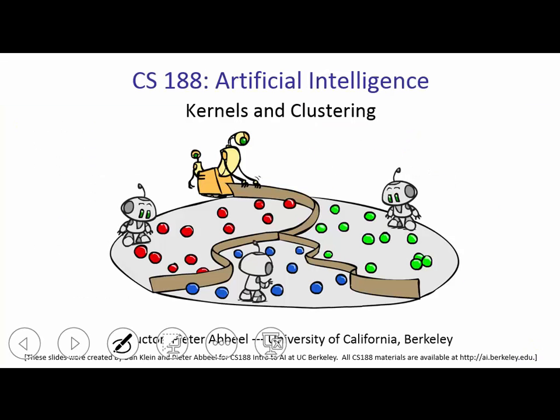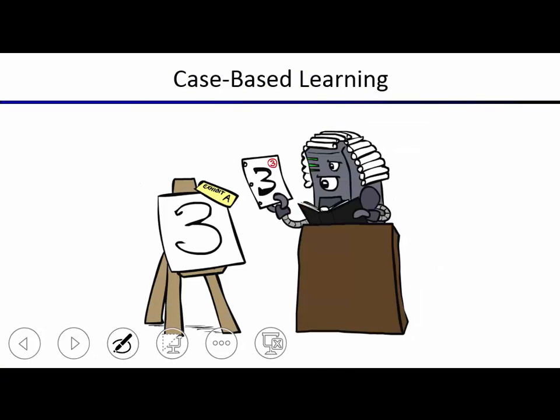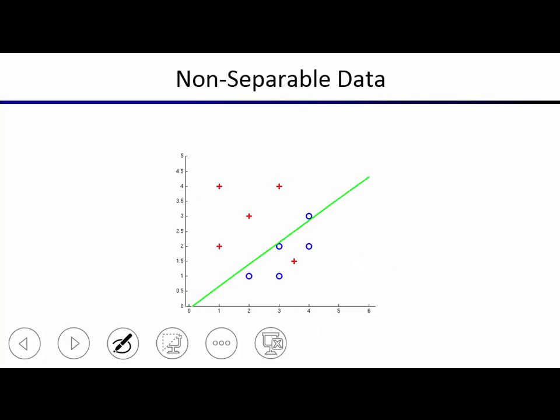Let's get started with kernels and clustering. We're going to look at a different way of doing classification today — it's called case-based learning. Here's some motivation: if you have non-separable data, you might want to carve out a region to label as positive for new examples. If you just use a linear classifier like the perceptron, the best you can do is find the best linear classifier. At least as far as you've covered it in last lecture.